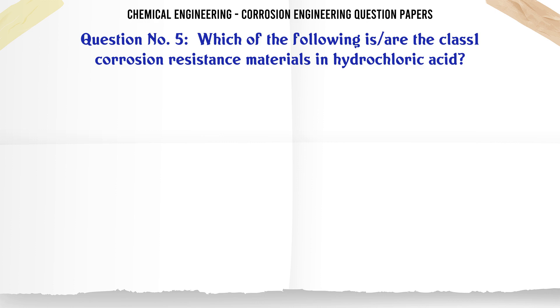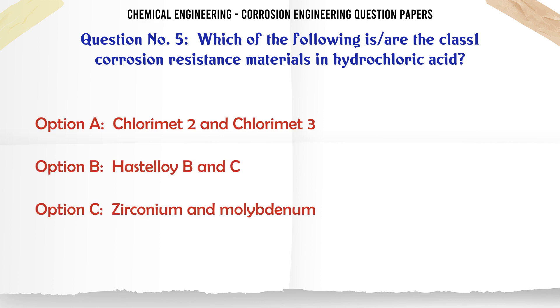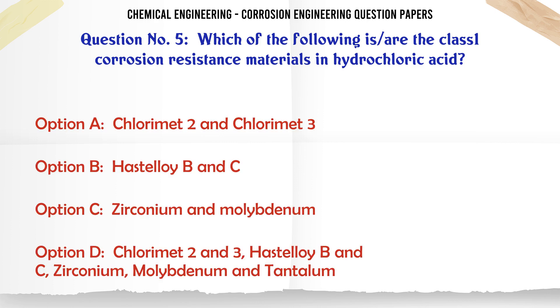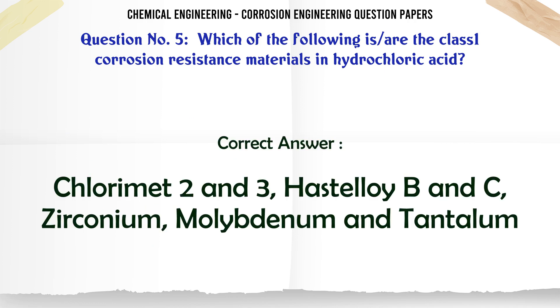Which of the following is/are the class 1 corrosion resistance materials in hydrochloric acid? A. Chlorimet 2 and Chlorimet 3. B. Hastelloy B and C. C. Zirconium and molybdenum. D. Chlorimet 2 and 3, Hastelloy B and C, zirconium, molybdenum, and tantalum.